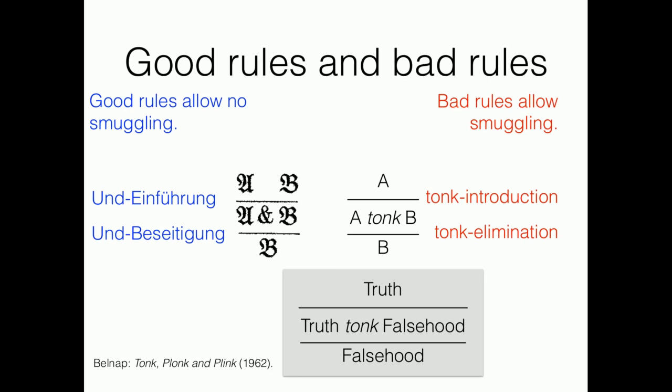There are a lot of good rules and bad rules. These und-einführung, und-beseitigen, they are good rules because they don't allow you to smuggle things into your proofs. When you have a proof of A, then you have a proof of B, you can get a proof of A and B, but the only thing you can do with it is to introduce B or A. And you already had it in the beginning, so nothing new happened here.